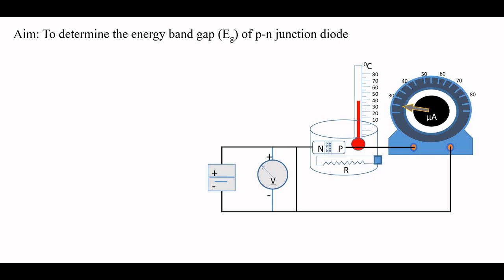The experimental setup that we will use in this experiment consists of a DC power supply, a diode, a thermometer to measure the temperature, an ammeter to measure the reverse saturation current, a heating arrangement, and a voltmeter to measure the voltage that we have applied.